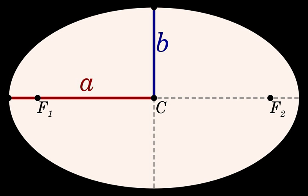The semi-major axis of a hyperbola is, depending on the convention, plus or minus one-half of the distance between the two branches. If the semi-major axis a is in the x-direction, the equation is (x − h)²/a² − (y − k)²/b² = 1.